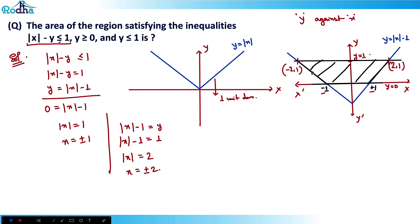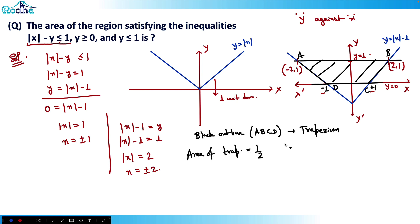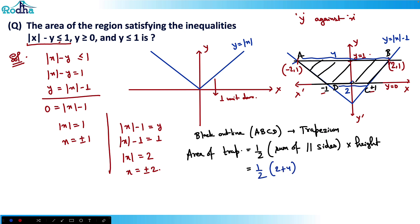So now I have the trapezium ABCD. The area of a trapezium = ½ × (sum of parallel sides) × height. The bottom side from -1 to +1 has length 2, and the top side from -2 to +2 has length 4. The height is from y = 0 to y = 1, which is 1 unit. So area = ½ × (2 + 4) × 1 = 3 square units.